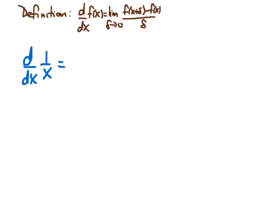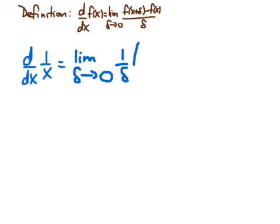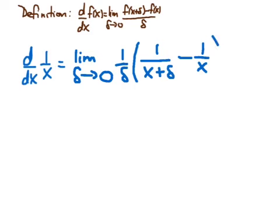Our first example is to differentiate 1 over x using our definition. This is going to be the limit as delta approaches zero. We have a difference of two fractions, and rather than writing a difference of fractions all divided by delta, it's easier to write the delta in the denominator as a factor of 1 over delta multiplying everything. So we open brackets and evaluate the function at x plus delta, giving 1 divided by x plus delta, then subtract the function evaluated at x, which is just 1 over x.